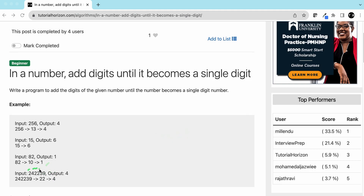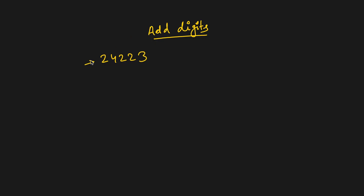Here we have 2, 4, 2, 3, 9. If we add all the digits, that will become 22, and then we will add 2 plus 2, that is 4. So let's see how we can solve this problem. Let's say we have the number 24223. If we add 2, 4, 6, 4, 10, 13 — this will become 13, and 13 is 1 plus 3, so our output should be 4.